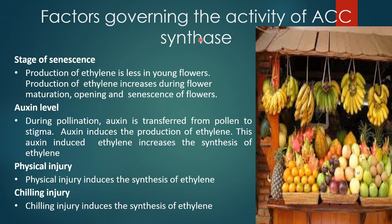Factors governing the activity of ACC synthase. First, stages of senescence: production of ethylene is less in younger flowers and increases during flower maturation, opening and senescence of flowers. Second, auxin level: during pollination, auxin is transferred from pollen to stigma. Auxin induces the production of ethylene. This auxin-induced ethylene further increases the synthesis of ethylene.